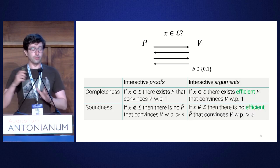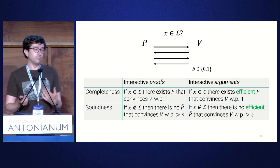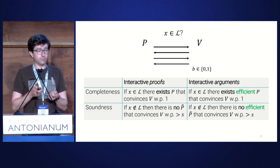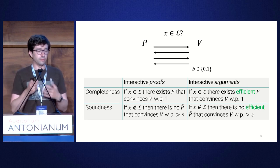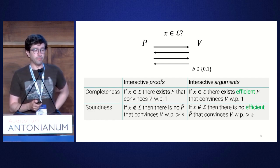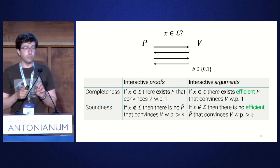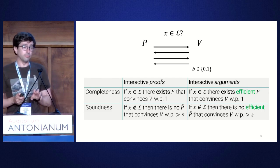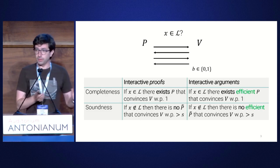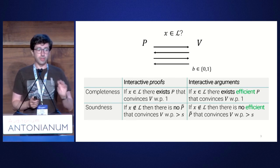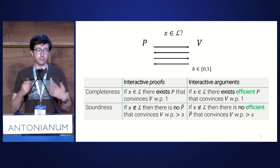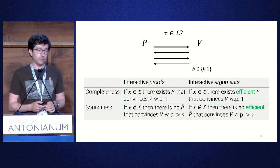On the cryptographic side, we have a technically incomparable notion called interactive arguments. Basically, you plug in the word 'efficient' into both definitions. The honest prover should be efficient, maybe given a witness for X. And more importantly, in the soundness case, we only have to defend against efficient provers. It might be the case that inefficient provers can convince the verifier even with probability one, but we don't care about those.